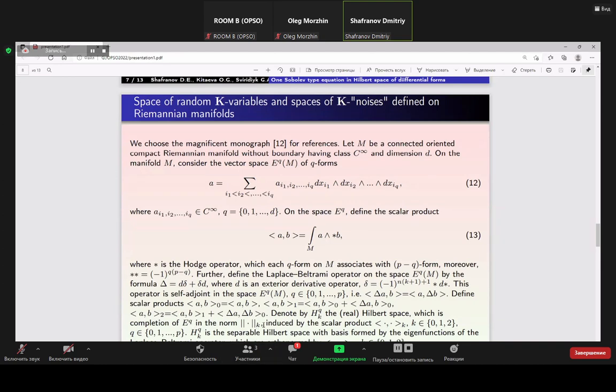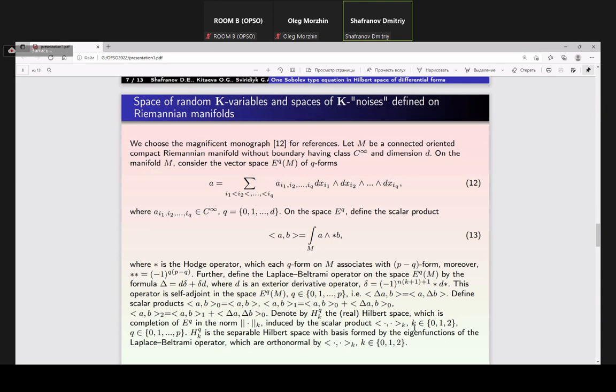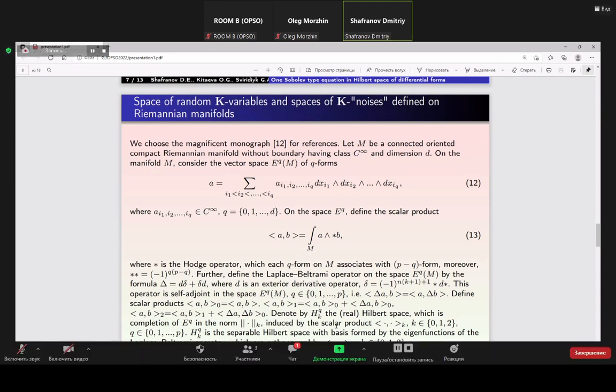With the norm, norm sub K, induced by one of these scalar products, H sub K supplement Q is the separable Hilbert space with basis formed by the eigenfunction of the Laplace-Beltrami operator which are orthonormal by scalar product with K zero, one, or two.